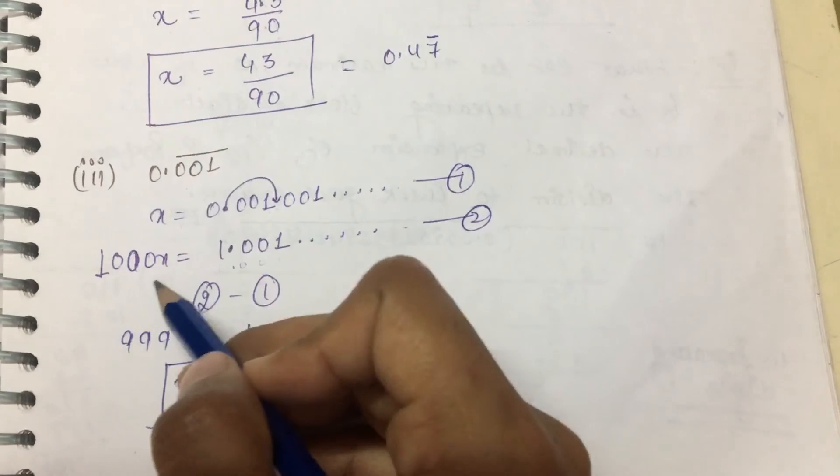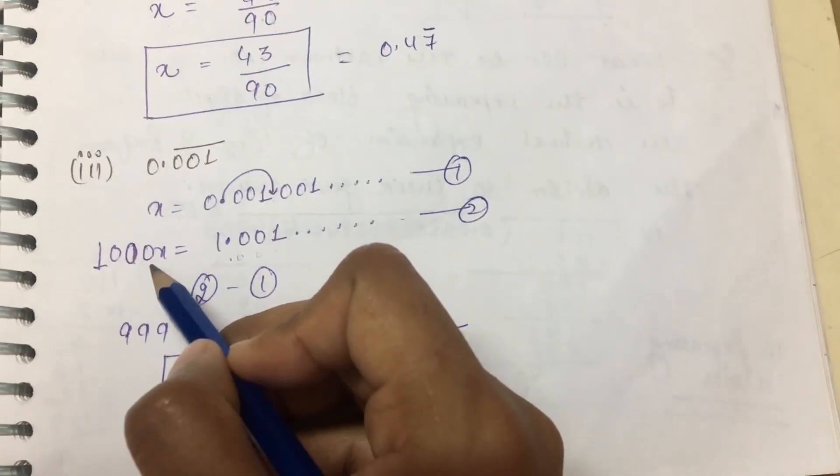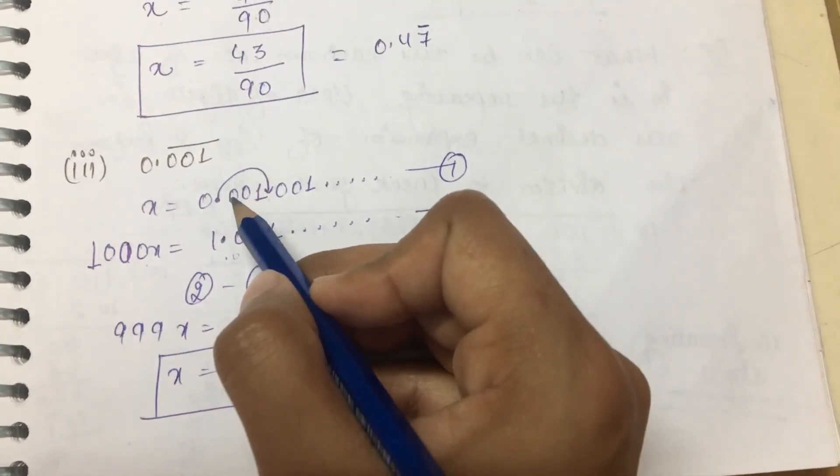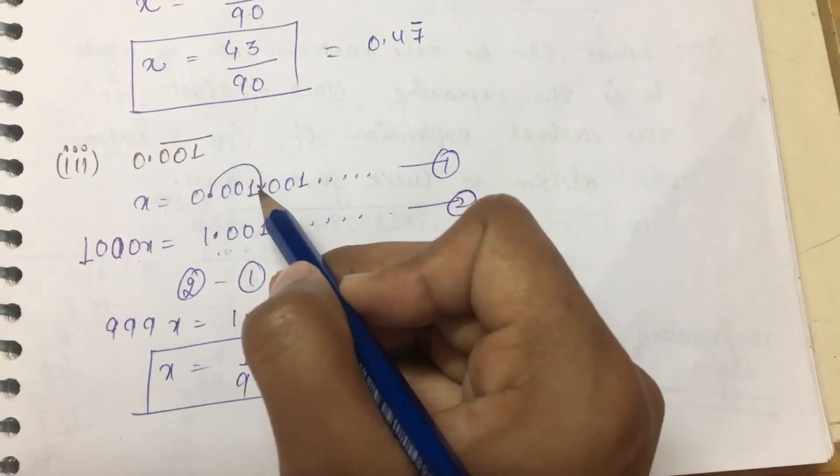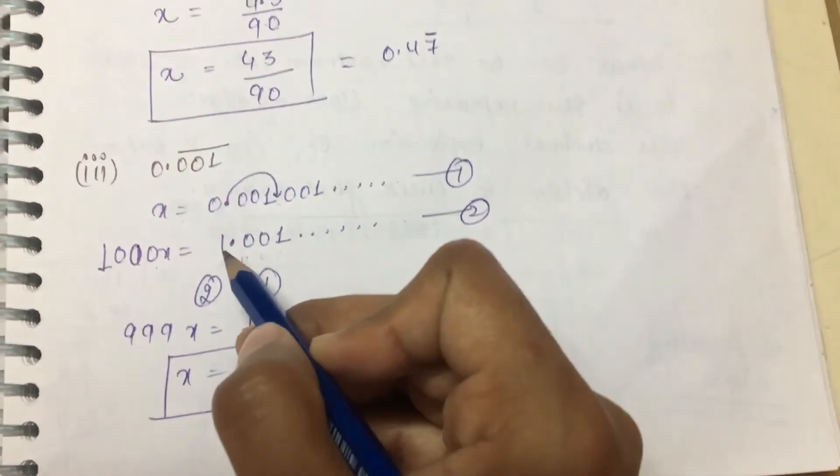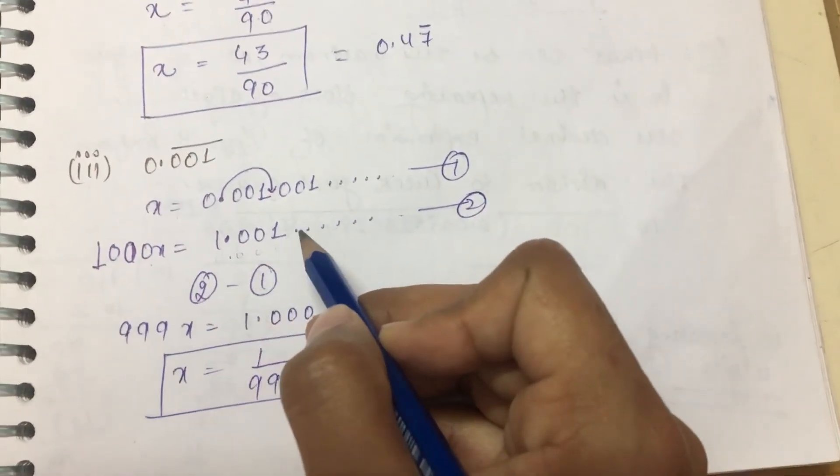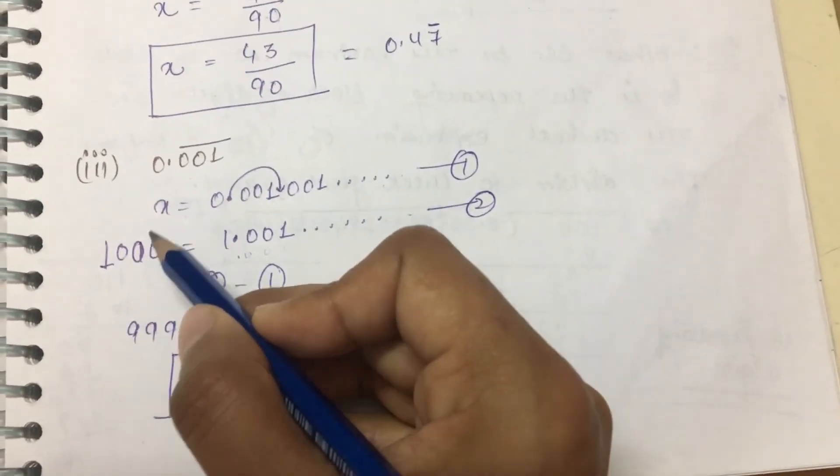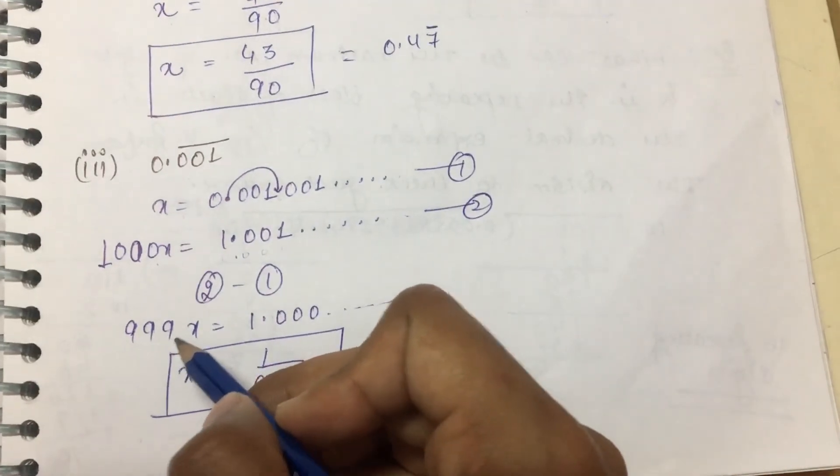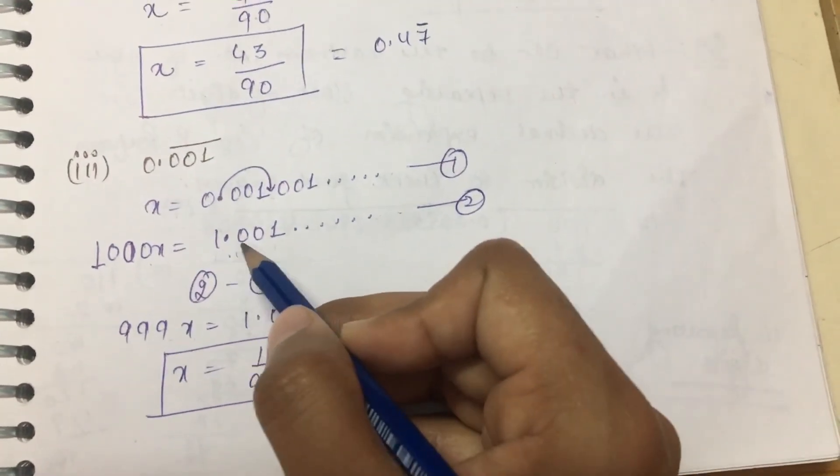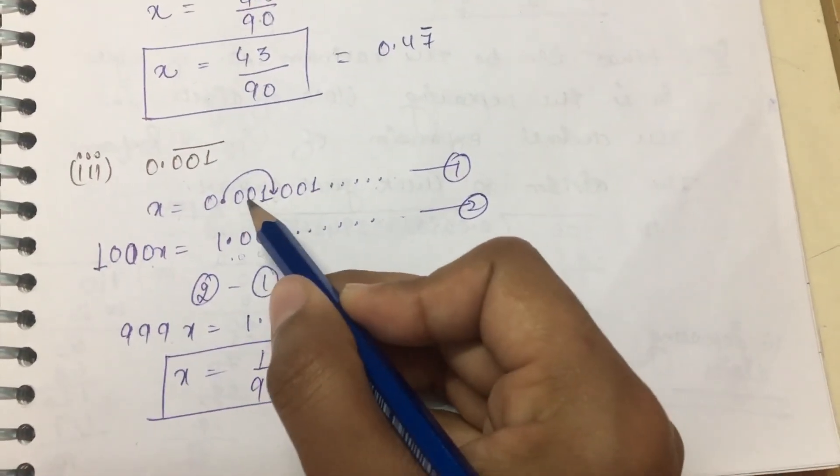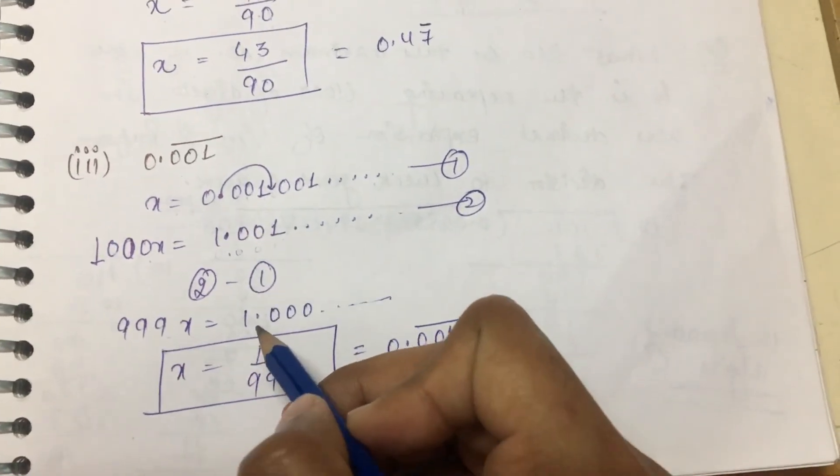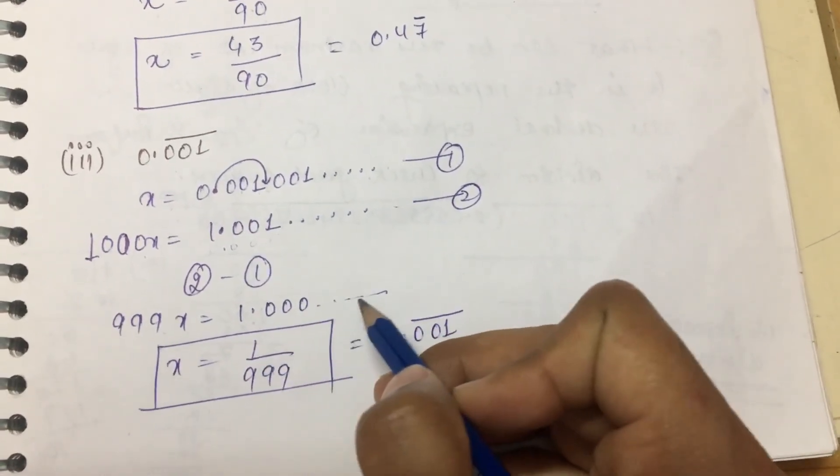Three digits repeating, so multiply by 1000. 1000x equals 1.001. Now we subtract: 1000x minus x equals 999x, and 1.001 minus 0.001 equals 1.00.